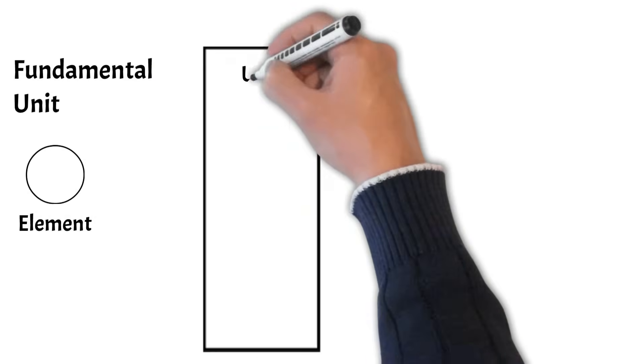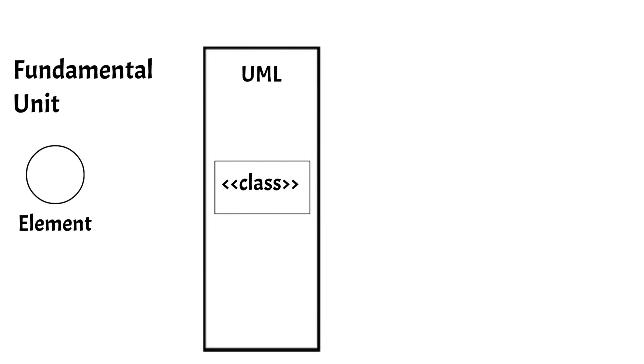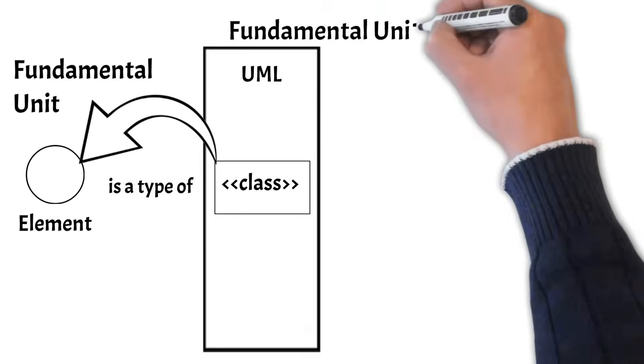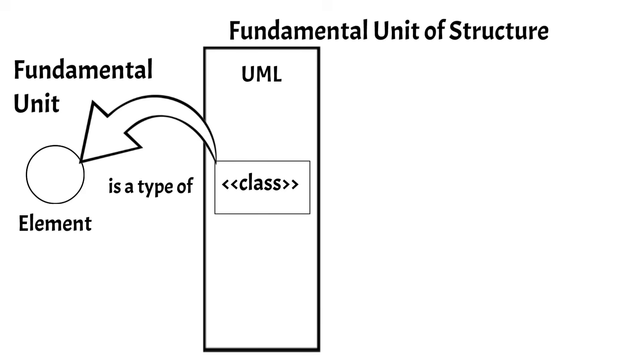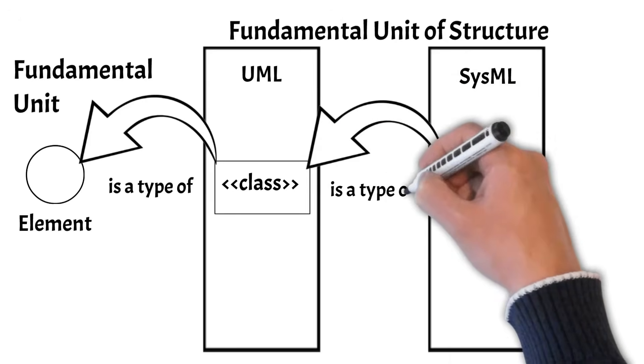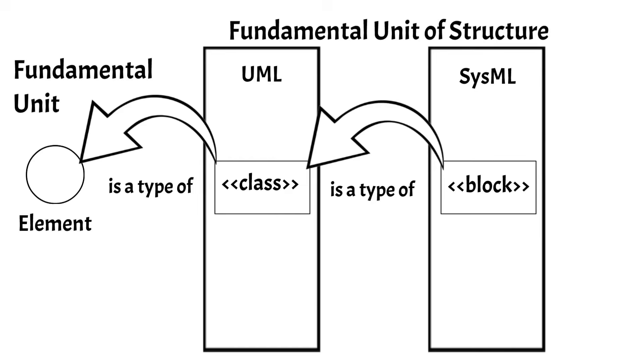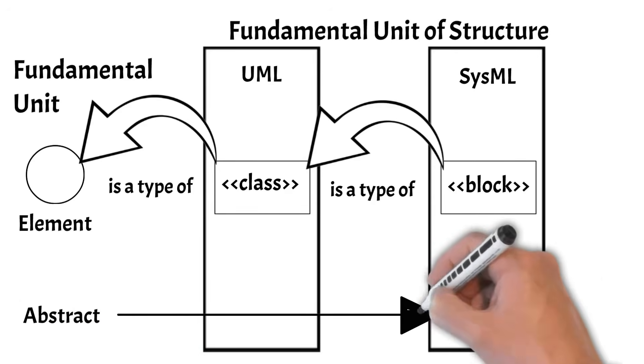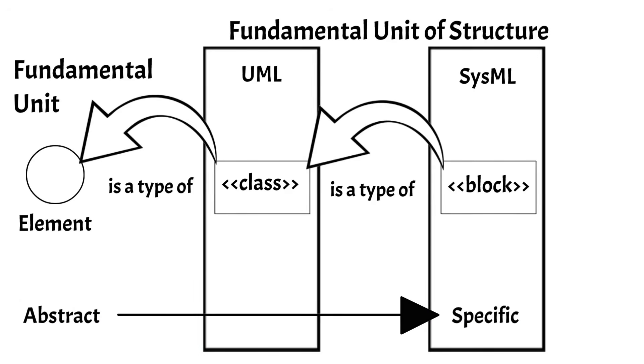As explained before, the element is the root node, or unit, in the UML and SysML languages. The class is a specific type of element used in UML. The SysML block was built from the UML class. The block is the fundamental unit of structure in SysML and is used tremendously in the language. Notice that as we move from left to right the element types go from general to specific.